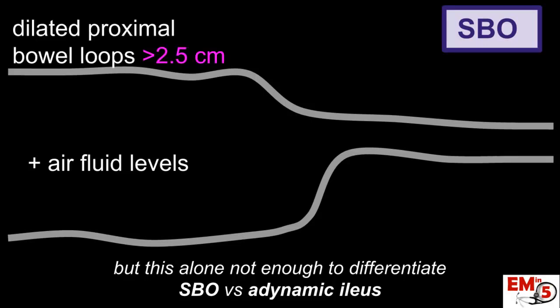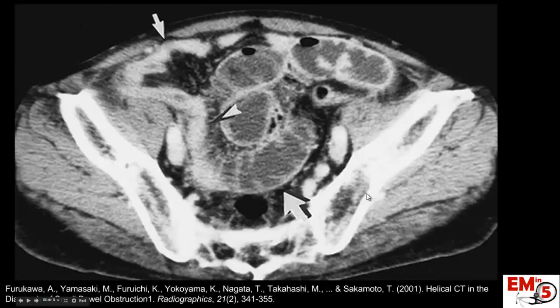What we're going to look for is dilated proximal bowel loops — that's before the transition point or before the obstruction. It should be dilated greater than 2.5 centimeters. Distally, after the obstruction, we should see collapse of the distal bowel, and what's between here is the transition point. Here's a great example on CT of distended proximal small bowel greater than 2.5 centimeters, then a transition point, and then distally, collapsed small bowel — that would be a complete obstruction.